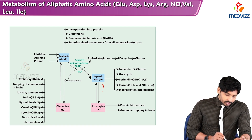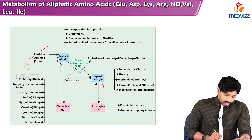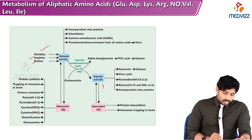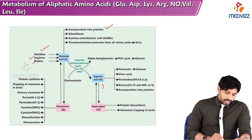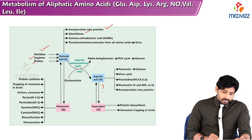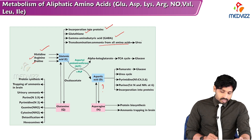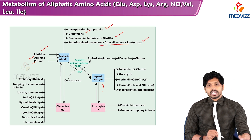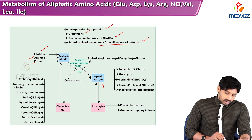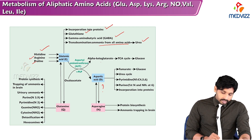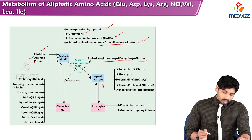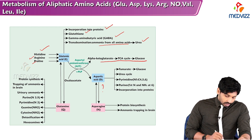Conversion of glutamic acid to glutamine is reversible, as is the conversion of aspartic acid to asparagine. Contributors to glutamic acid synthesis include histidine, arginine, proline, and glutamine. Functions of glutamic acid include: incorporation into proteins, glutathione synthesis, GABA (inhibitory neurotransmitter) formation, transamination reactions collecting ammonia from all amino acids, urea formation, and entry of alpha-ketoglutarate into the TCA cycle for glucose synthesis.